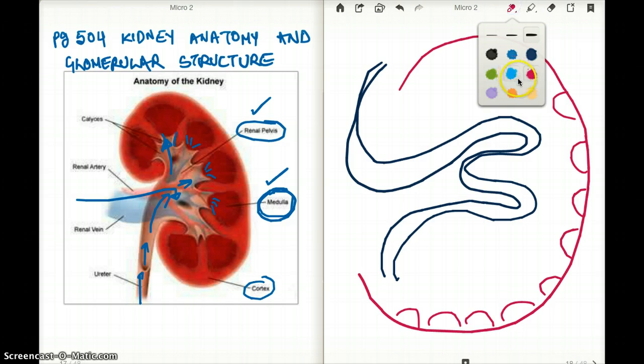And then you are going to have podocytes here, followed by epithelial cells here. So this would be your epithelial cells. Epithelial cells is going to be followed by your basement membrane. Basement membrane is going to follow epithelial cells. And after the epithelial cells, you're going to start having the endothelial cells here.